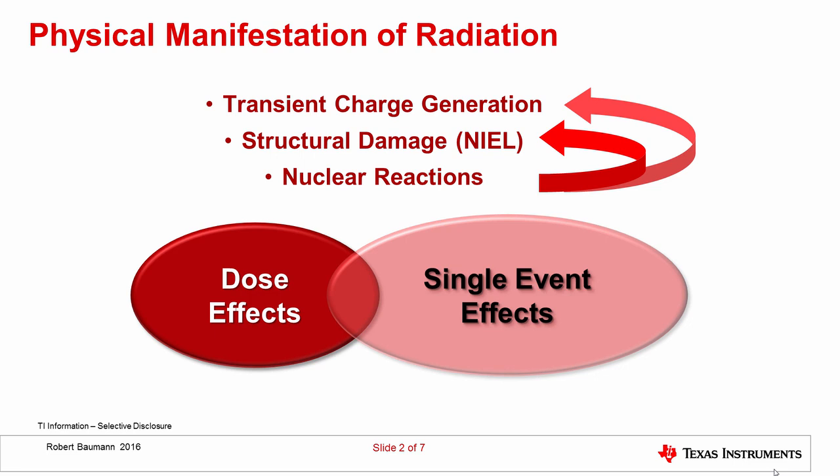In sharp contrast, the other key mechanism is single event effects. This is where a single nuclear particle or radiation event causes a measurable upset or an actual circuit failure. Dose effects are chronic exposure over time, and single event effects are like lightning strikes — the event occurs and then something bad happens to your electronics.